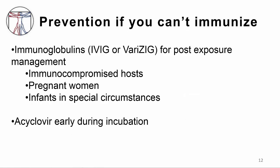You can't give live vaccine to certain patients, but you can provide passive immunization by giving antibodies directed against VZV if there is an exposure. We save this approach for immunocompromised patients like those with cancer, pregnant women, and babies born to moms who develop varicella around the time of delivery. In some instances, we give acyclovir to stop viral replication early in the course of infection.